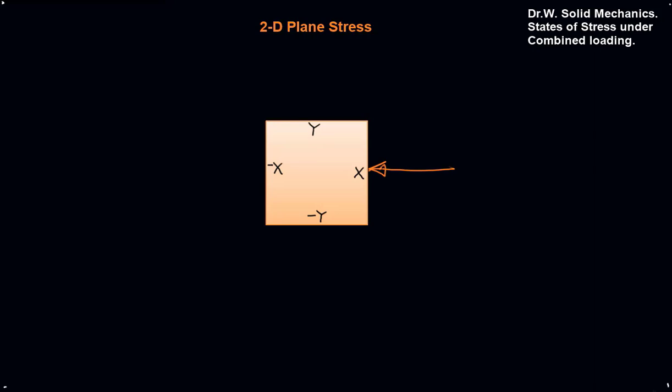Here on the x-face, let's say we have a stress — stress one. This element has to be in equilibrium, so the sum of the forces in x has to be zero. If we push on the x-face with a compressive stress, we'd have to have an equal and opposite compressive stress on the negative x-face. So we find there's a stress one here as well.